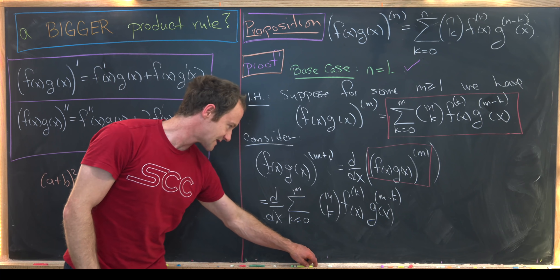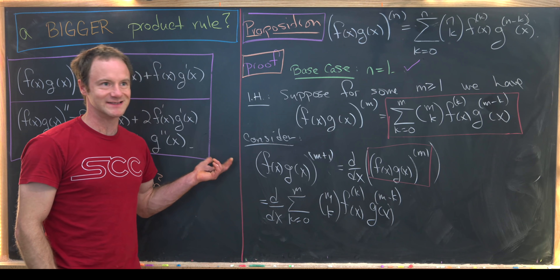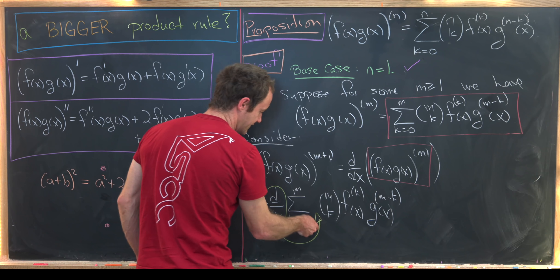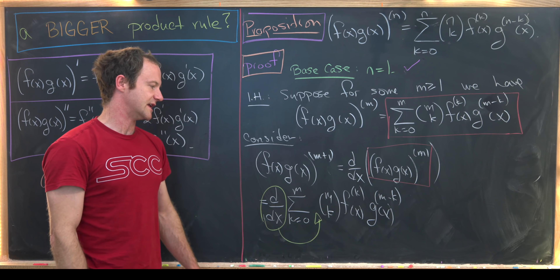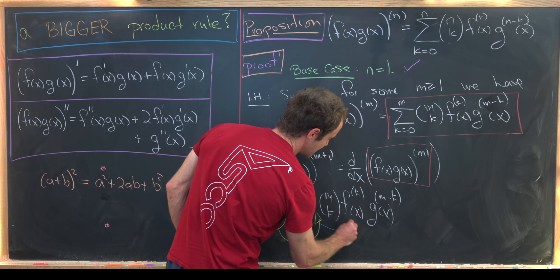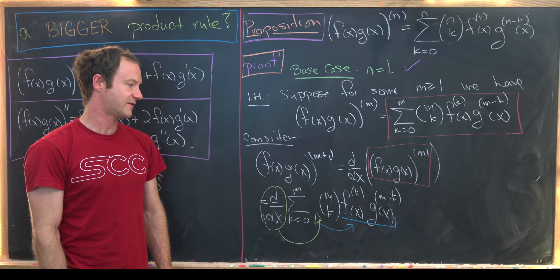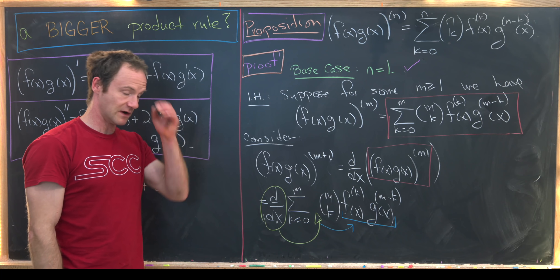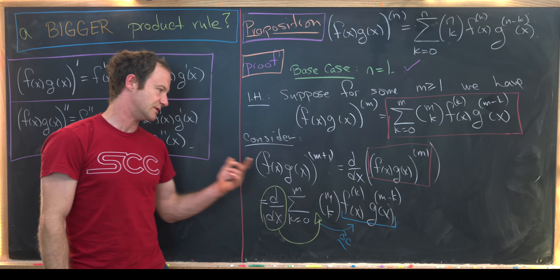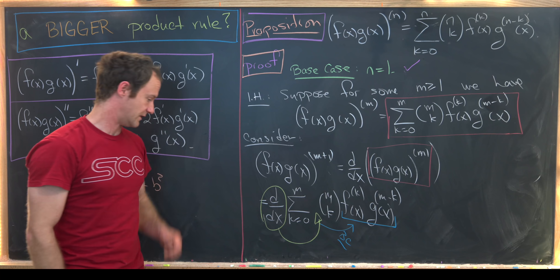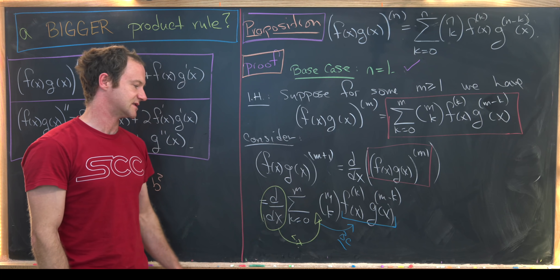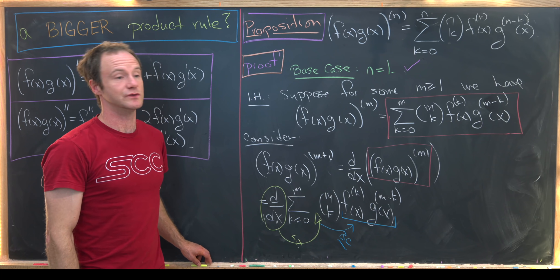For our next step, we use the fact that the derivative is a linear transformation on the space of differentiable functions. So we can bring this derivative inside the sum, and also inside the multiplication by the binomial coefficient. Then we apply this derivative to the product of the kth derivative of f and the (m−k)th derivative of g — that's really just applying the base case to that product.